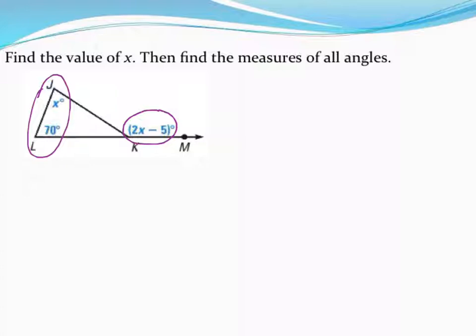So unlike last time we are not adding all three angles together to equal 180. Instead what turns out to be true is that if I were to take these two interior angles and add them together they'll be equal to this one exterior angle. So let's use that fact to help us set up an equation to find x.